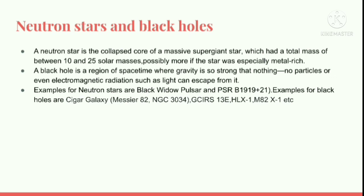Now we're going to talk about neutron stars and black holes. A neutron star is a collapsed core of a massive supergiant star which had a total mass of between 10 and 25 solar masses, possibly more if the star was especially metal-rich. A black hole is a region of spacetime where gravity is so strong that nothing — no particles or even electromagnetic radiation such as light — can escape from it.